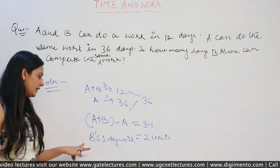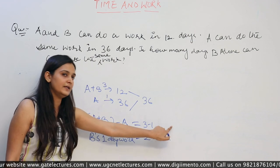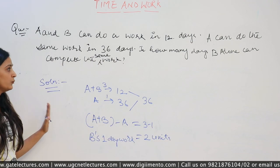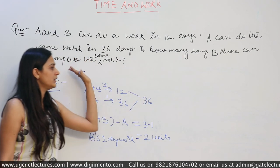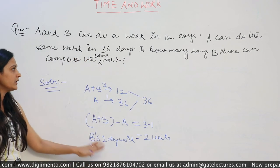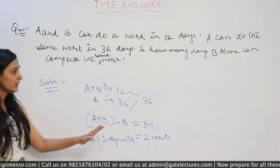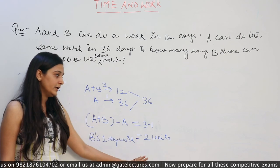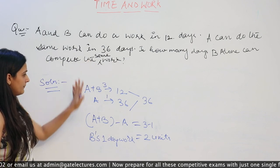Subtract the one day work of A from the one day work of A+B to get the one day work of B. Then number of days B alone will complete the work = total work ÷ efficiency of B.